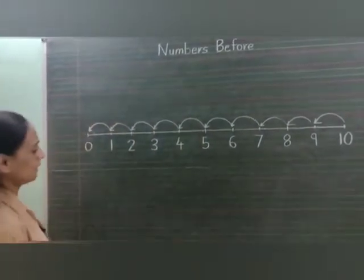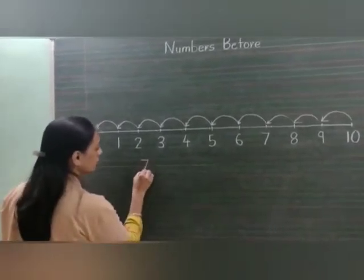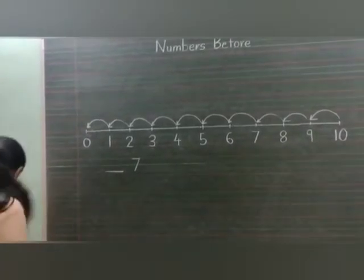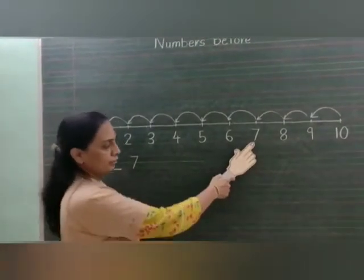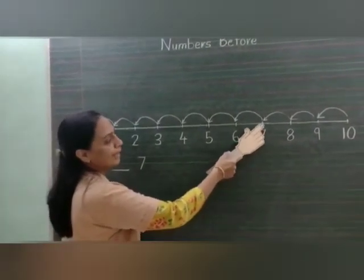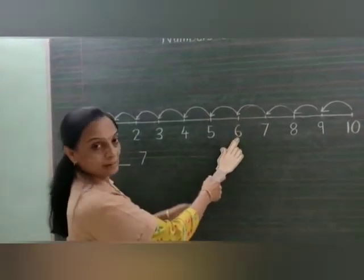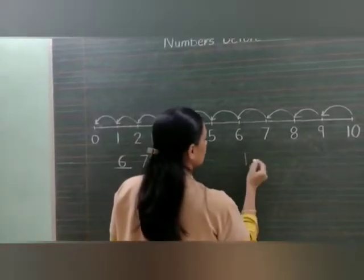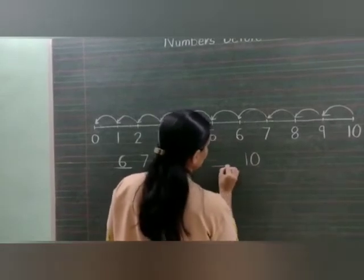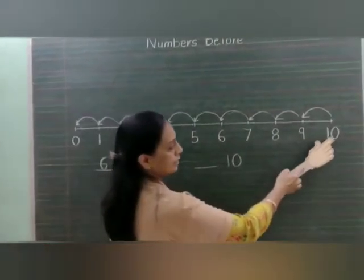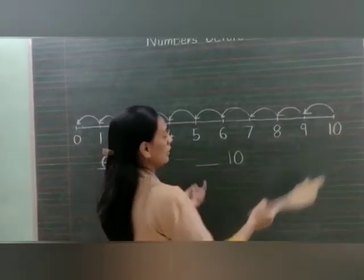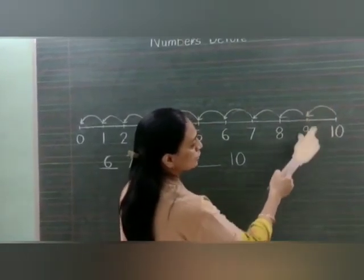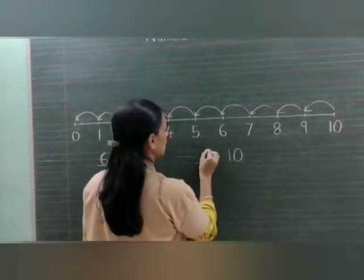Now let us see through some examples. I am taking number 7 — we have to find the number which comes before 7. Here is number 7 on the number line. We jump backwards and we get number 6. Now I will take number 10. Here is number 10 — I jump backwards, and the number before 10 is number 9.